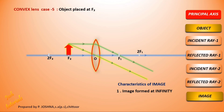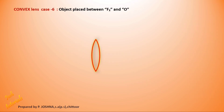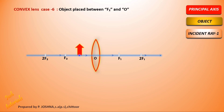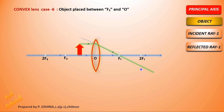Case 6: Object placed between F2 and the optic center. Draw the principal axis with evenly marked focal points and centers of curvature. Place the object between the focal point and the optic center. The first incident ray is parallel to the principal axis, so it goes through the focal point. Since the image is at infinity on the other side, we extend backwards — drawing a backward line on the same side as the object.